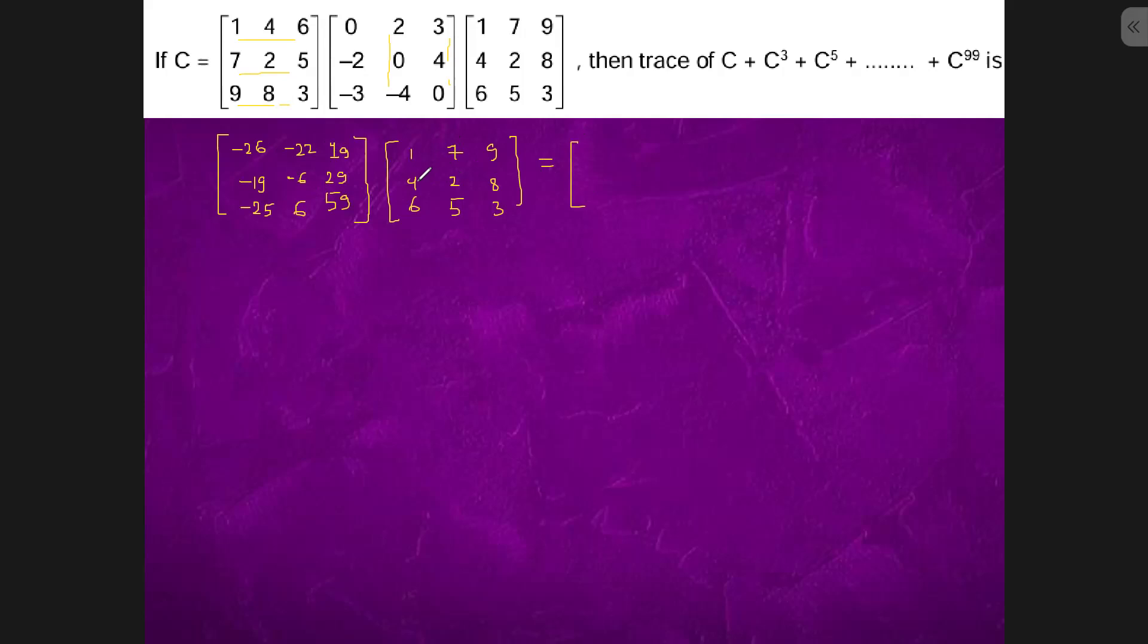26 minus 26 minus 88 minus 26 minus 88 plus 114, this is 0. From here we will calculate the middle one. This is 19 into 7 equals 133.